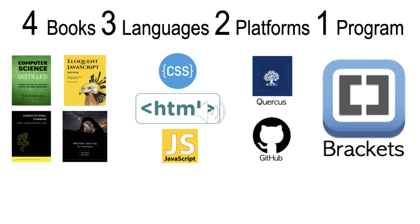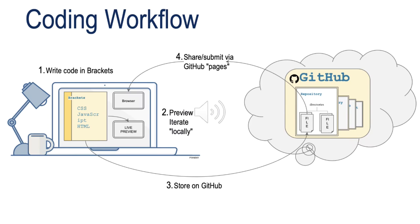The platforms are Quercus, which you're probably familiar with, and GitHub. The one program or application is called Brackets. Although the work of the course is not dominated by coding, when we are doing coding exercises, this is what our workflow will look like. We'll write some code in the application Brackets, which is an editor, using CSS, JavaScript, and HTML. Brackets provides a Live Preview option that lets us see the results of our work immediately in the browser. When satisfied, we'll store the files up on GitHub, and we'll use GitHub Pages to serve them so instructors, TAs, or colleagues can see them.